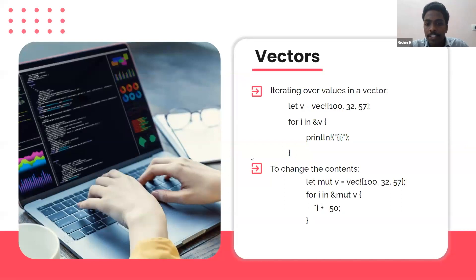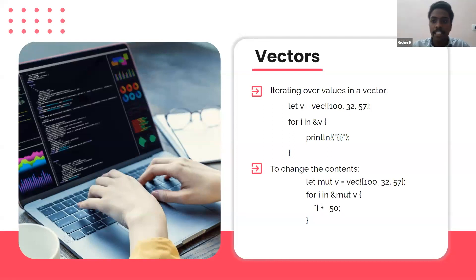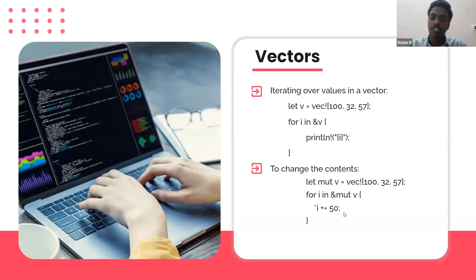For mutable iteration, you can write `for i in &mut v` to take a mutable reference and change values in place. Using `*i += value` dereferences the reference: the ampersand gives you the memory address, while the star dereferences it to the actual value stored there. So using `*i` lets you change the value at that address.